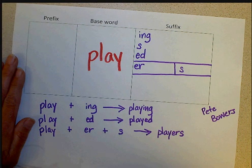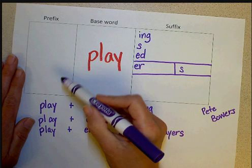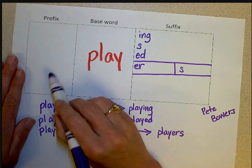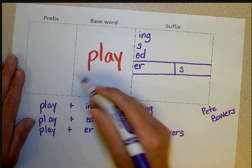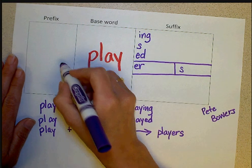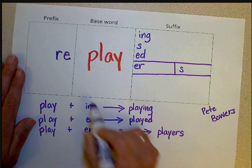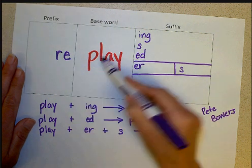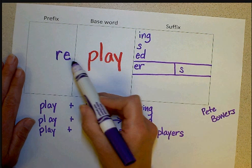Now, we can add suffixes, but we can also add prefixes. So a really common prefix that would go with play is when you want to watch something again. And so we use the suffix R-E, which means again, so replay. So I can make replaying, replays, replayed, not so much about replay-er.